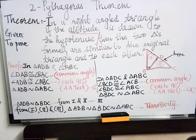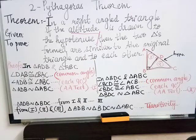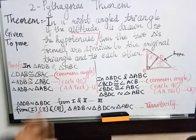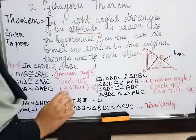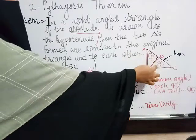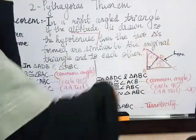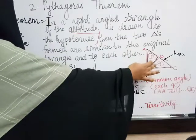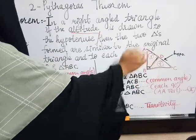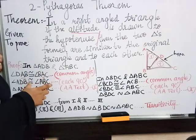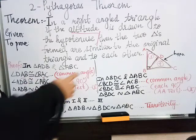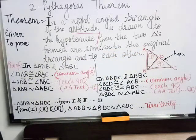So what you have to take first is triangle ADB — the triangle formed by drawing the altitude — and triangle ABC, the original. We take one formed triangle along with the original. We have proved that triangle ADB is similar to triangle ABC. This is equation one.